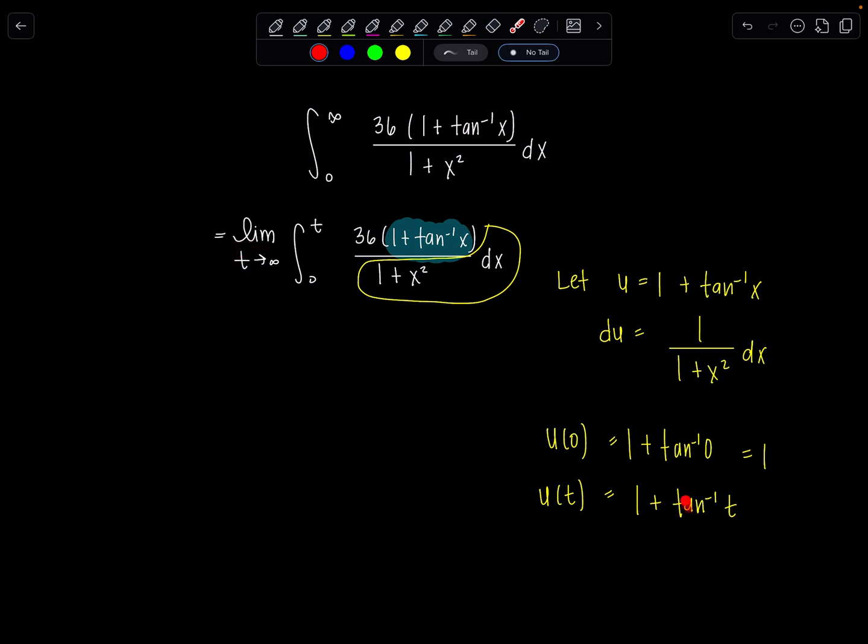Don't already take the limit and make this pi over 2. I saw some people do that. No, no. See how the limit's on the very outside? That means we deal with it last. So what do we got? Limit t goes to infinity integral from 1 to 1 plus tan inverse of t. 36 is just hanging out minding its business. 1 plus tan inverse of x, that's my u. And then the rest in that yellow little kidney bean is du. Doesn't it look like a kidney bean just a wee bit?